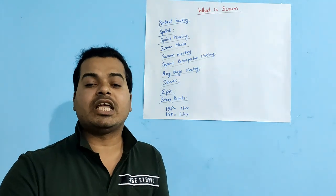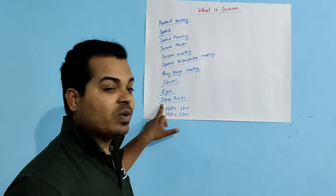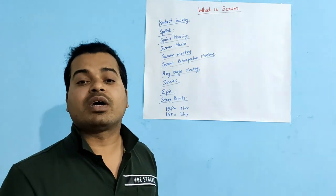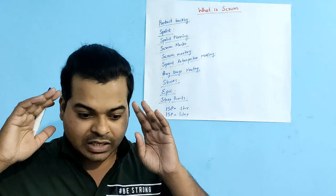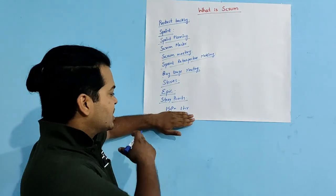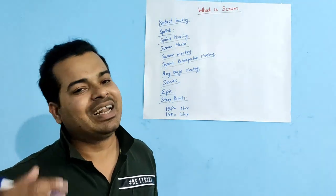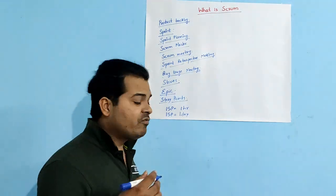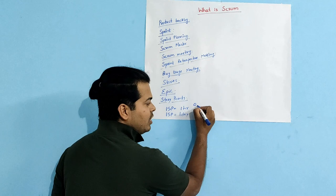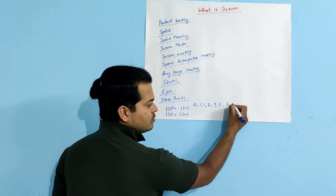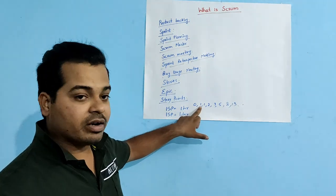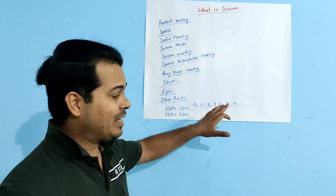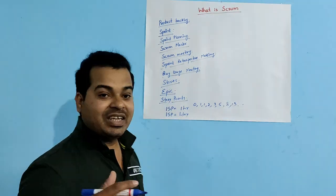When the Scrum Master assigns a task and asks for the Story Point, you give a rough approximation of the time required to complete it. For example, if you think a task will take five hours and your company defines one Story Point as one hour, you give five Story Points. Always remember: Story Points must be given in the form of a Fibonacci series — that is, 0, 1, 1, 2, 3, 5, 8 — so your Story Point should follow that sequence.